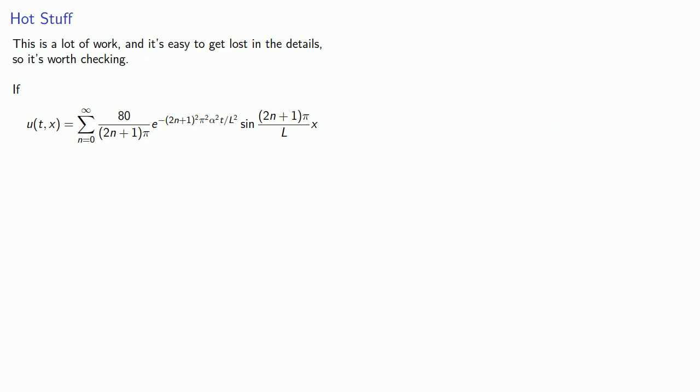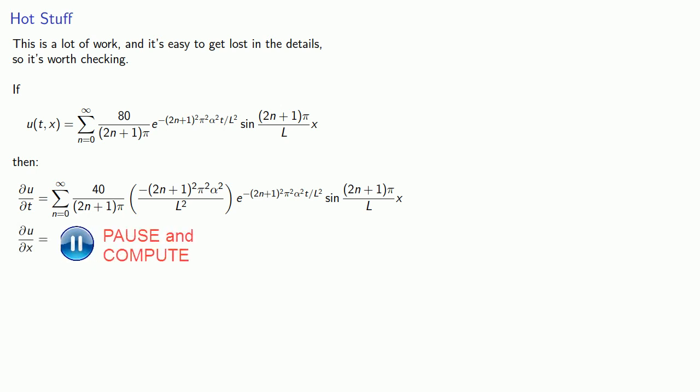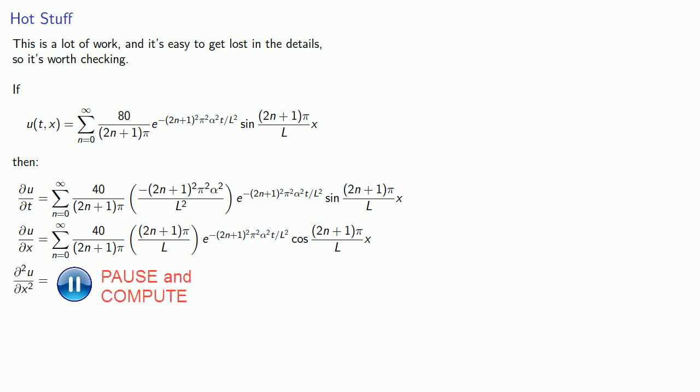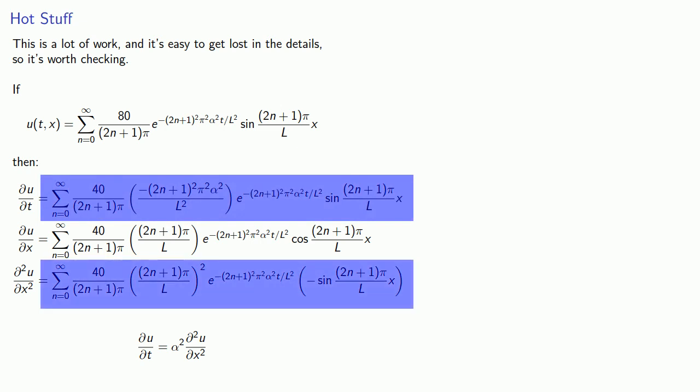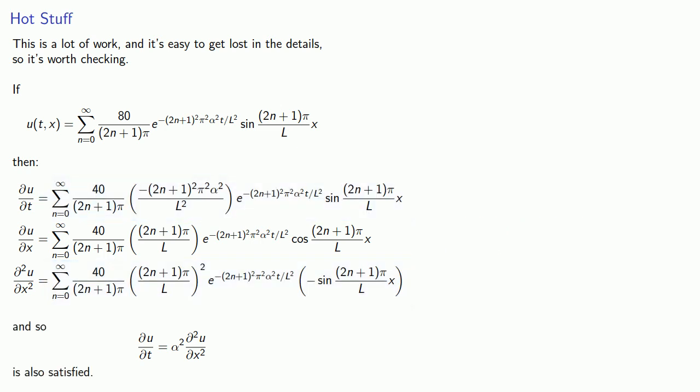We also have a differential equation we're trying to solve, so we can find our partial derivative with respect to u, our partial derivative with respect to x. Actually we need the second partial with respect to x. Our differential equation is the partial of u with respect to t should be alpha squared times the second partial with respect to x. If we compare, we see that our differential equation is also satisfied.